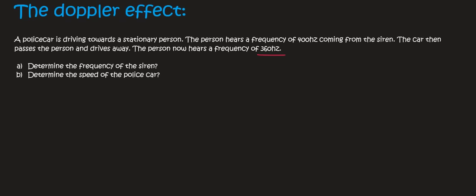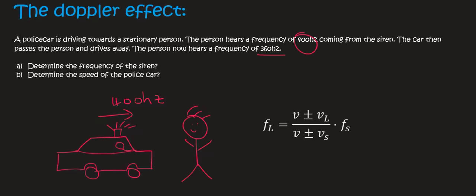Okay, so let me quickly draw this out. In the first part we've got a car coming towards a person and the person can hear a frequency of 400 hertz. So let's use a formula just for that. So the Doppler effect formula is the following. Now you just fill in as much as you can. Also, the car is coming towards the person, so we're going to use a plus at the top and a minus at the bottom.